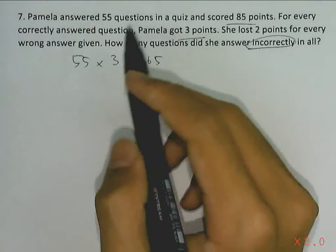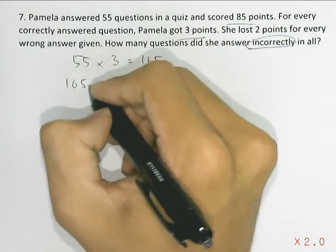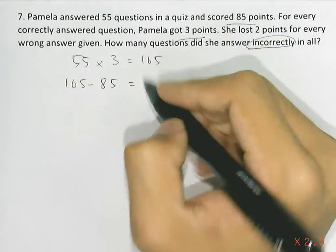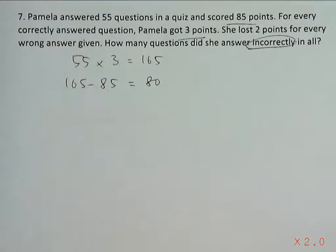But the question tells us that she earned 85 points. So the excess number of points will be 165 subtracting 85, giving us a total difference of 80 points.